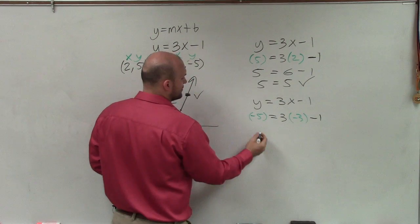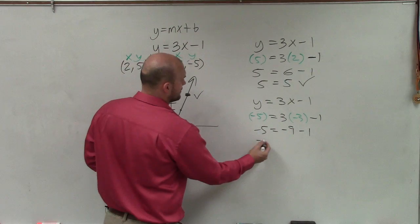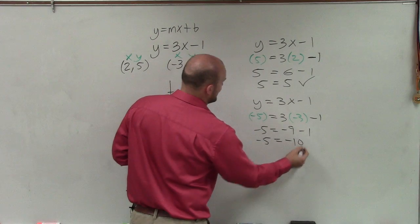OK. So negative 5 is equal to 3 times negative 3 is negative 9 minus 1. Negative 5 is equal to negative 10.